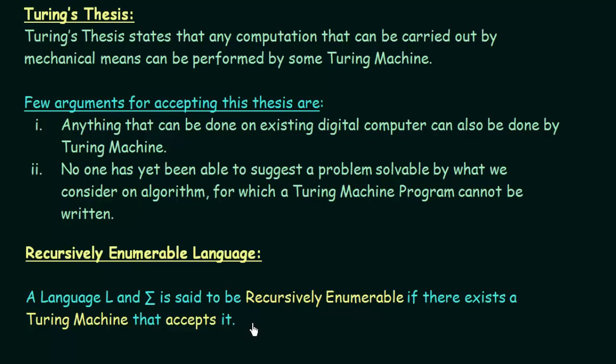When we talk about these languages, there are some other classes of languages to discuss, like Turing recognizable languages, Turing decidable languages, and languages that cannot be recognized or decided by Turing machines. We will do a separate lecture for that. First we will try to understand how Turing machine works and what kinds of languages are accepted by it.